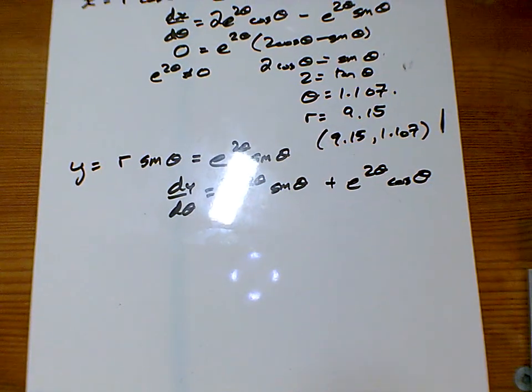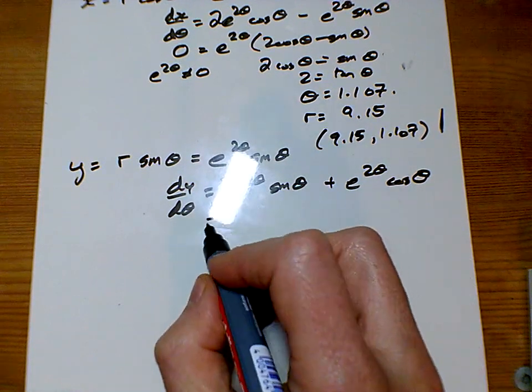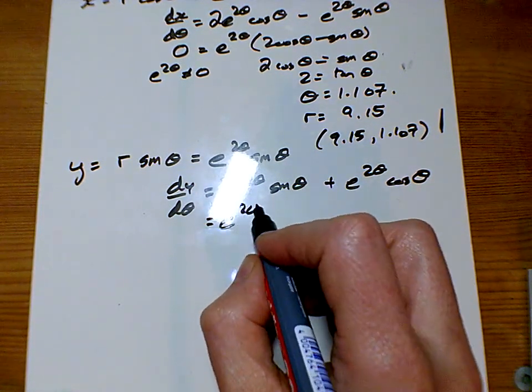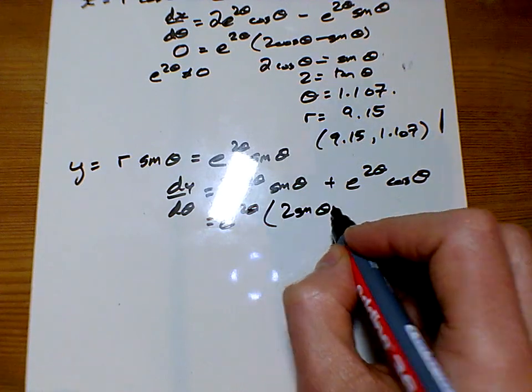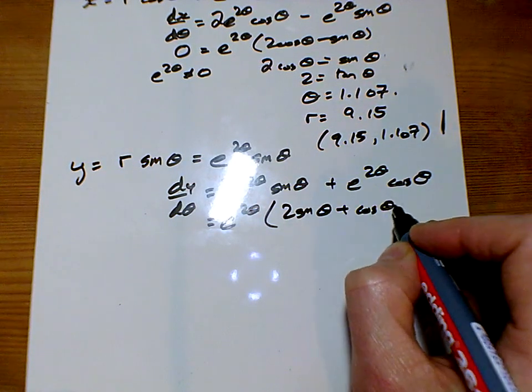And there's a plus in the middle this time. So very similar. I know there's a bit of shine there, but you know what that says. Very similar, just factorize out the e to the 2 theta. This time we've got 2 sine theta plus cos theta.